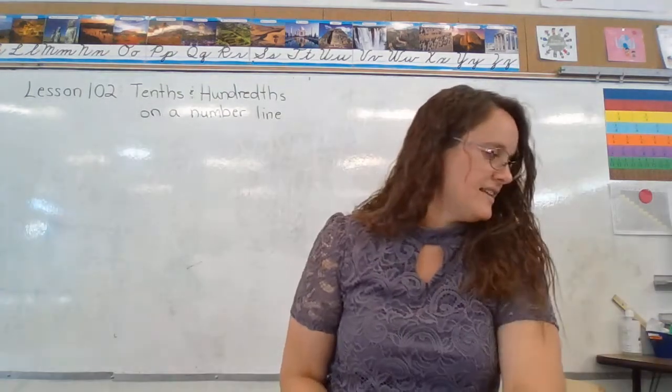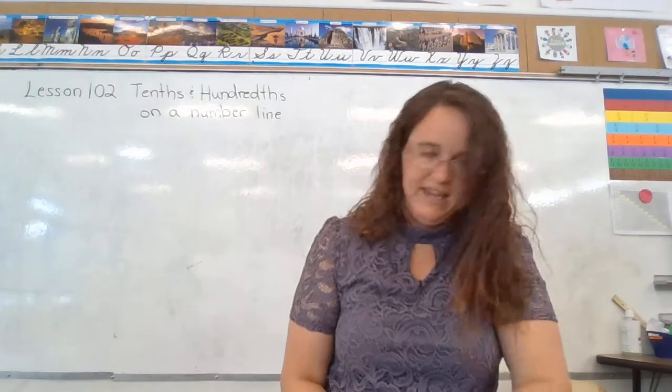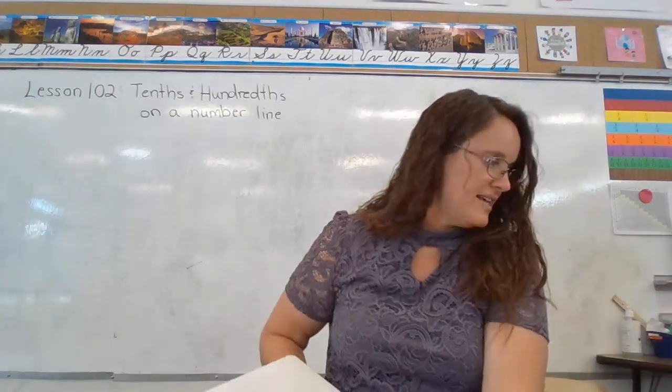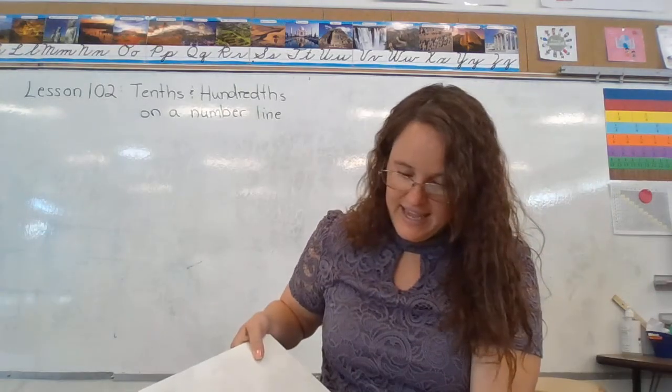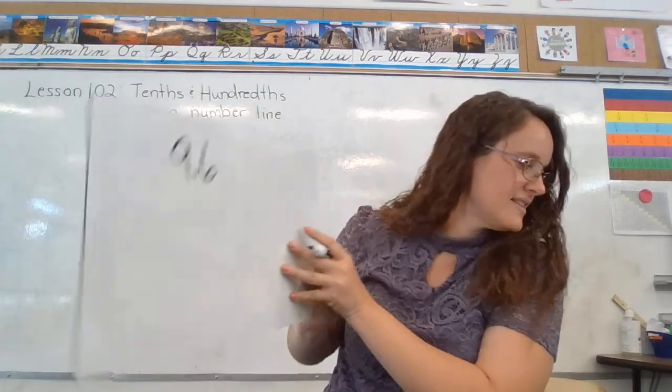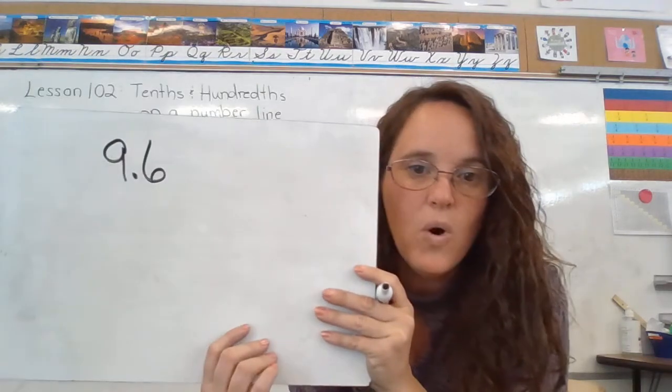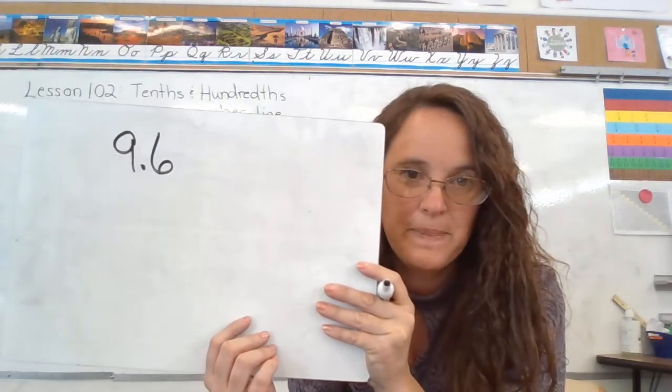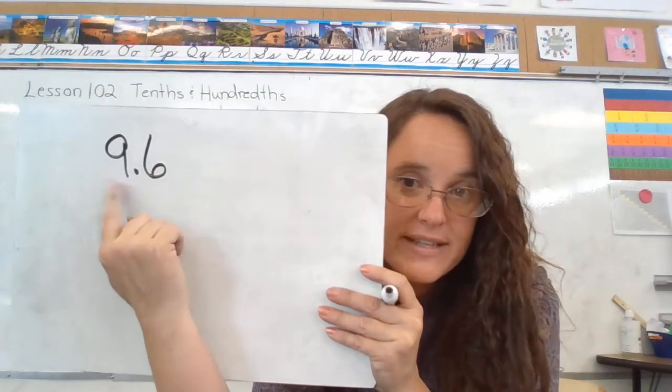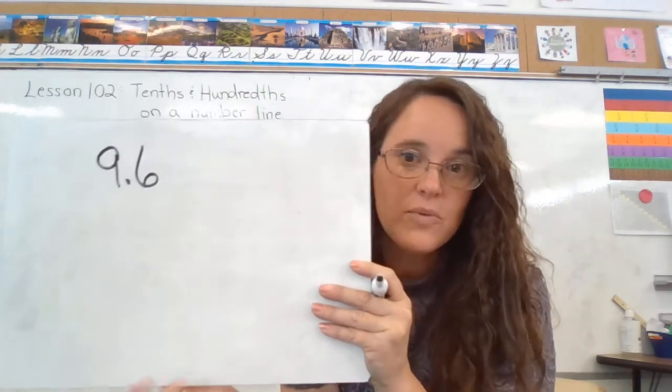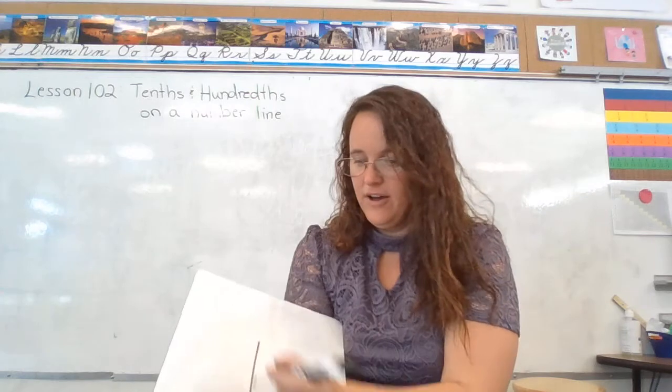Alright, take a look at example 3. It says round 9 and 6 tenths to the nearest whole number. So whole number is going to be the ones there. So we have to decide, on a number line,